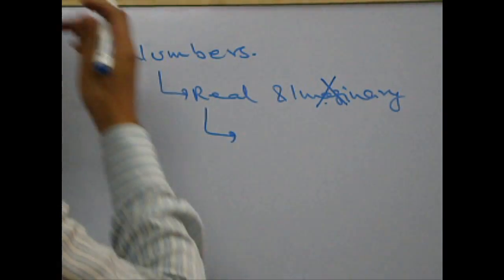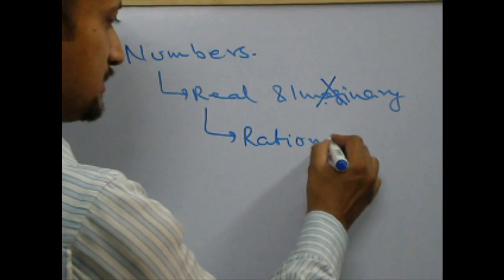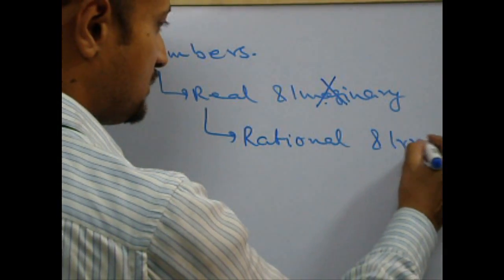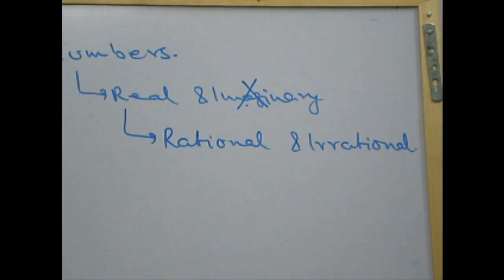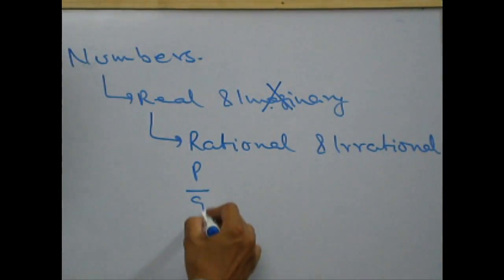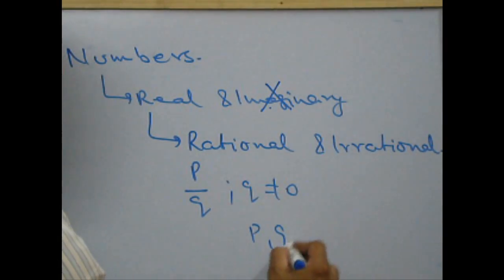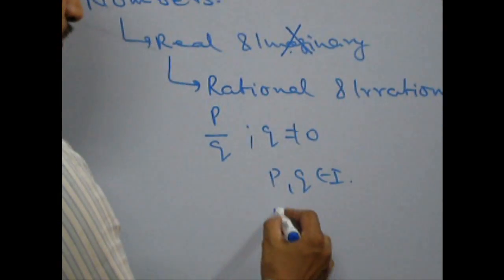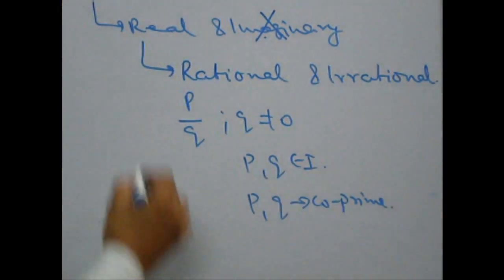Real numbers are categorized into several categories. The broadest of all is rational and irrational numbers. Let's see what rational numbers are. Any number of the form p upon q where q is not equal to 0 and p and q are integers and p and q are co-prime is a rational number.